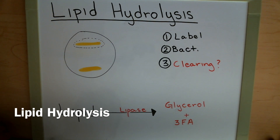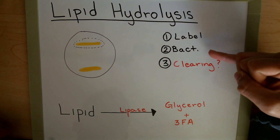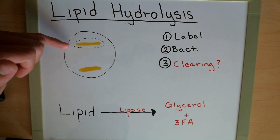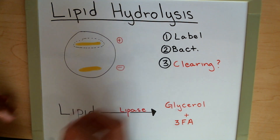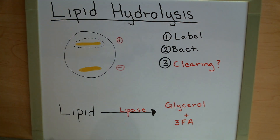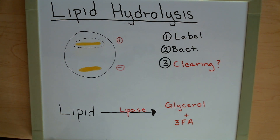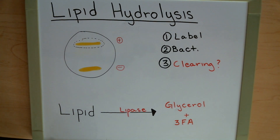Lastly, we're going to look at our lipid hydrolysis. Just like with casein, we're going to label our plates, add the bacteria, and look for a clearing. The one with a clearing indicates a positive result, while the one without is a negative result. A positive result means that our lipid has been broken down by the enzyme lipase into glycerol and fatty acids. The glycerol can be converted into a molecule that goes through glycolysis to make pyruvate, while the three fatty acids can go through beta-oxidation and react directly with coenzyme A to become acetyl-CoA.